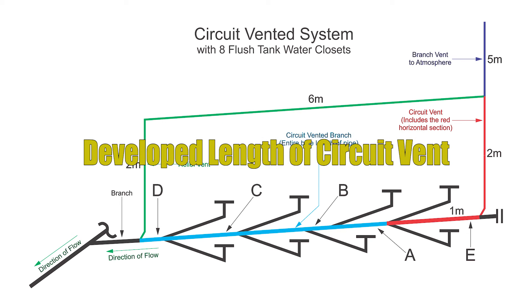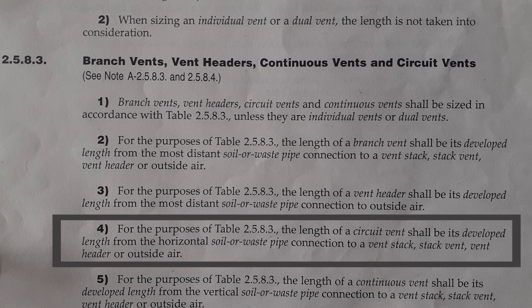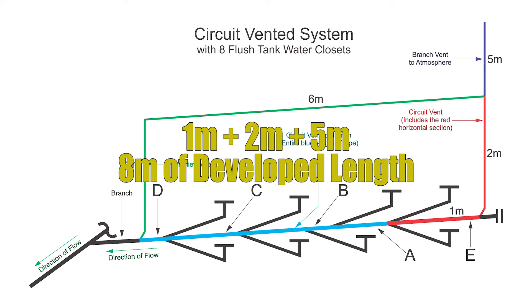The next part is the developed length. Code clause 2-5-8-3 part 4 states that for the purposes of table 2-5-8-3, the length of a circuit vent shall be its developed length from the horizontal soil or waste pipe connection to a vent stack, stack vent, vent header, or outside air. We start measuring from the first circuit-vented fixture and go all the way to outside air — in this example that equals 1 plus 2 plus 5 meters, giving us 8 meters of developed length.